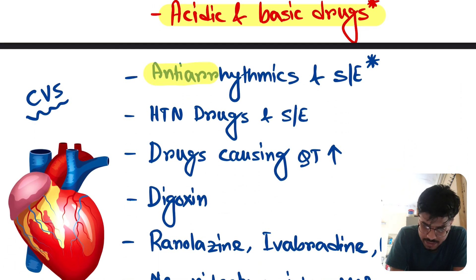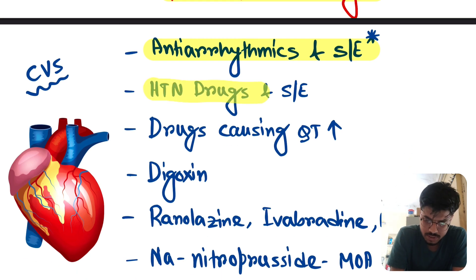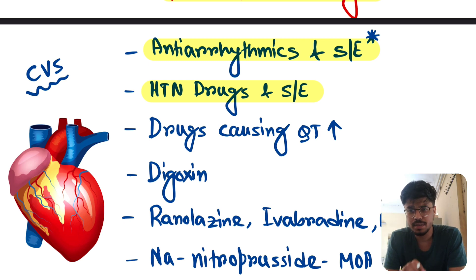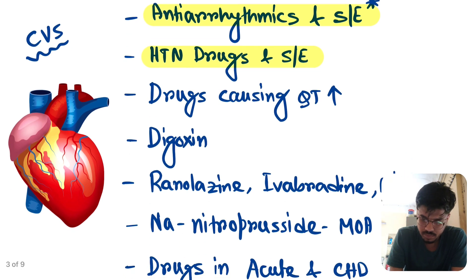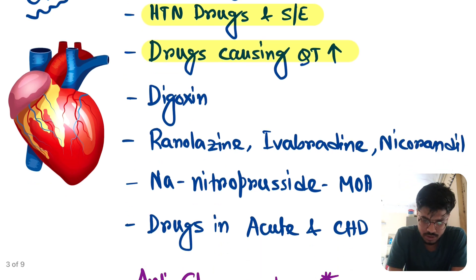Now in CVS, all the anti-arrhythmic drugs and side effects. At least all the uses and side effects. Hypertensive drugs and side effects. These side effects are very very important. You have to read all the side effects. Drugs causing QT prolongation. Again important topic. Digoxin, use, side effects, mechanism of action. All the important side effects. All are important. In digoxin, all are important. So you have to read in depth about digoxin.